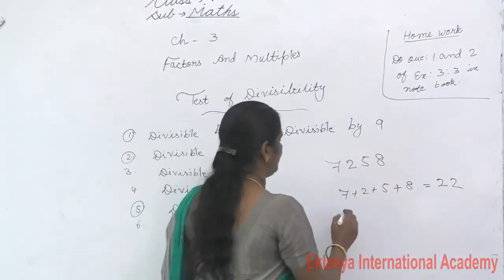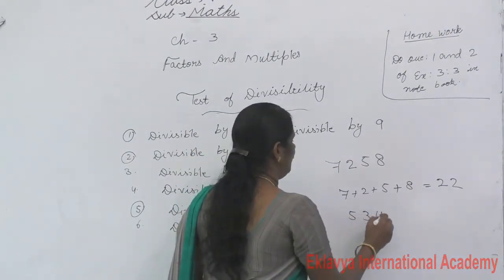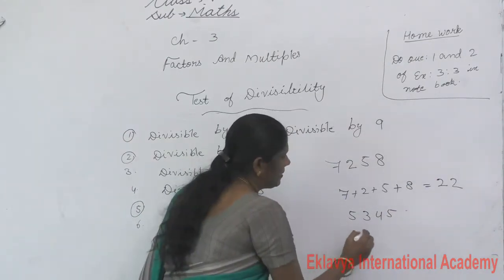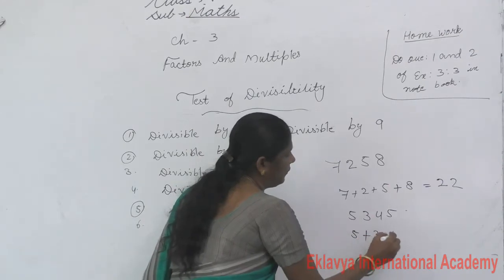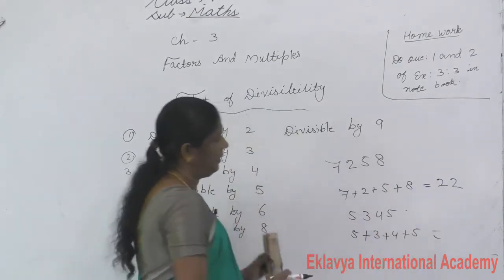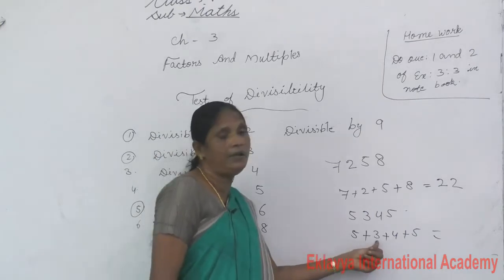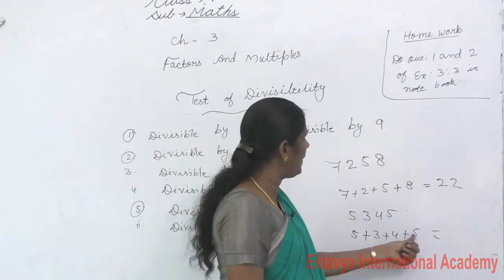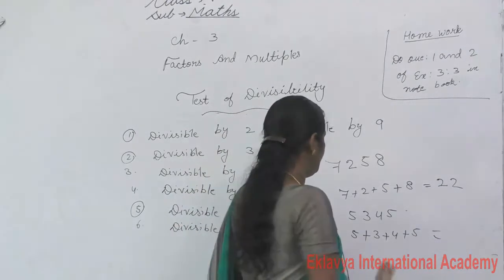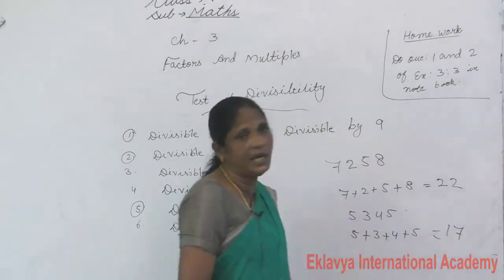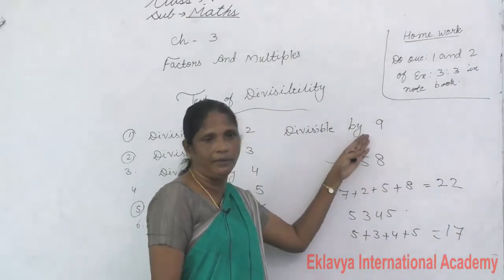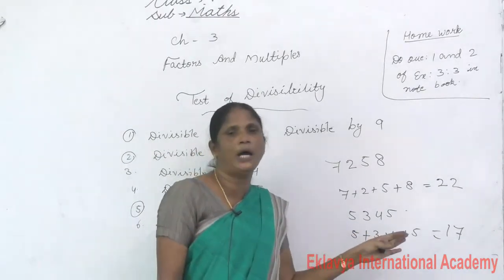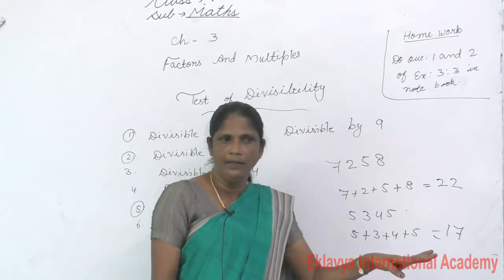Another example: 5345. Sum of digits: 5 + 3 + 4 + 5 = 17. Is 17 a multiple of 9? No. Therefore 5345 is not divisible by 9.